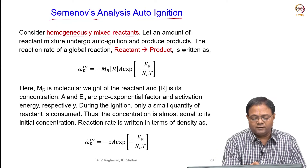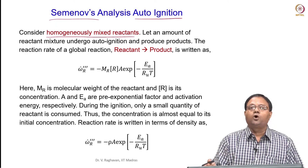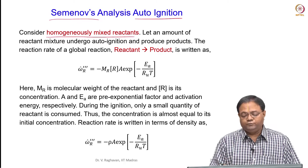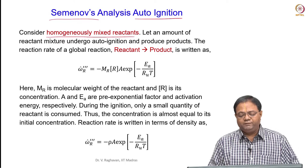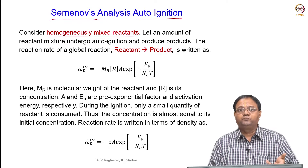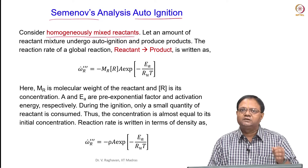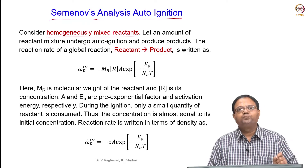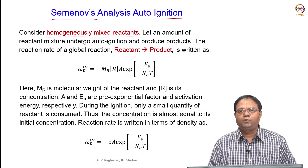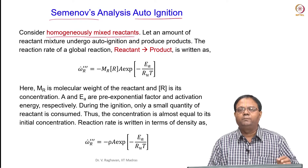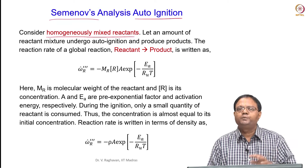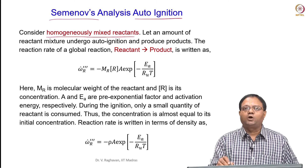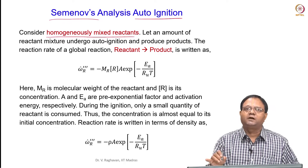We consider a homogeneously mixed reactant — that is, uniformly mixed everywhere with the same concentrations and the same unburned reactant temperature. Under that condition, we call the charge the homogeneous mixture. The reaction rate: let us consider a global reaction rate. Please understand that it is a transient process — to find exact ignition delays we need to employ a detailed kinetic mechanism or at least some mechanism with more species.